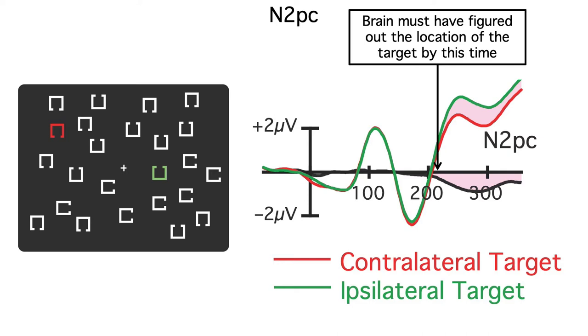And if the onset time of the difference wave is later in one condition than in another, or in one group than another, you can conclude that this reflects a difference in the time required to find the target and shift attention to it.